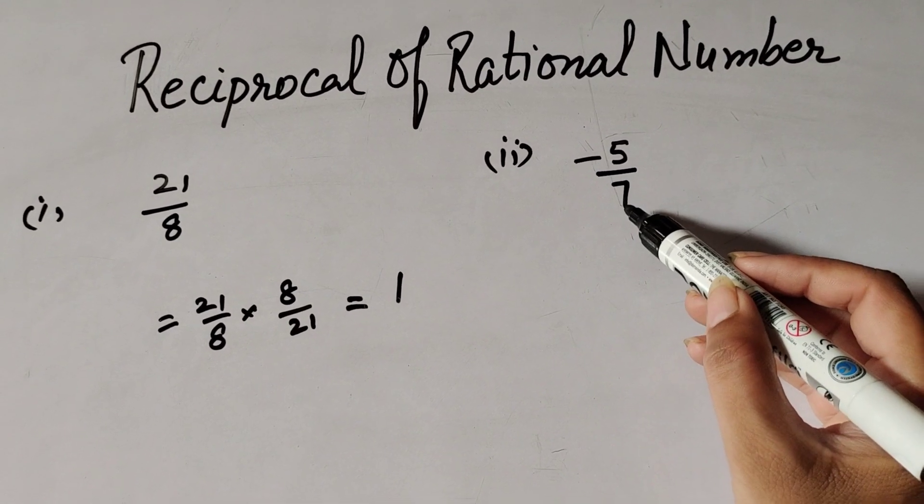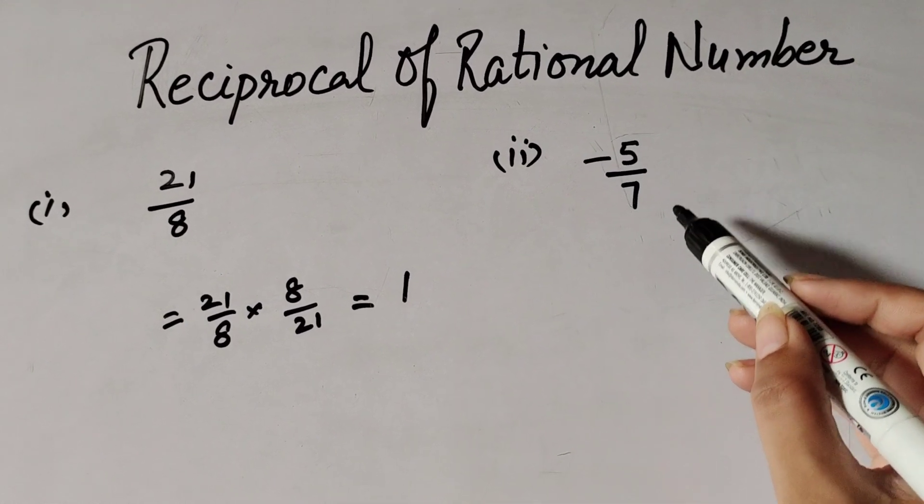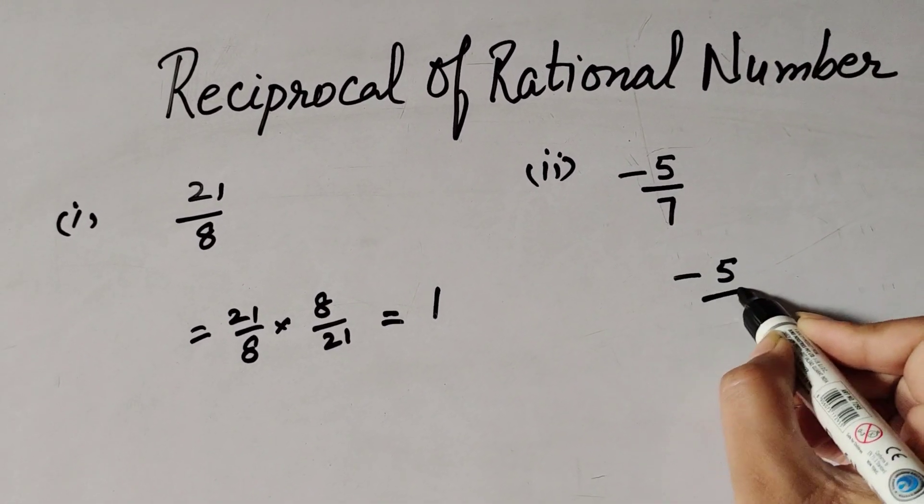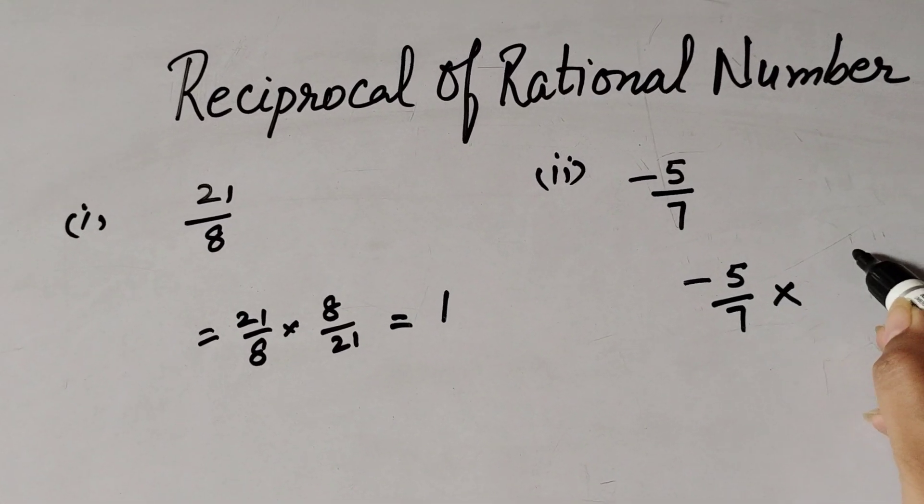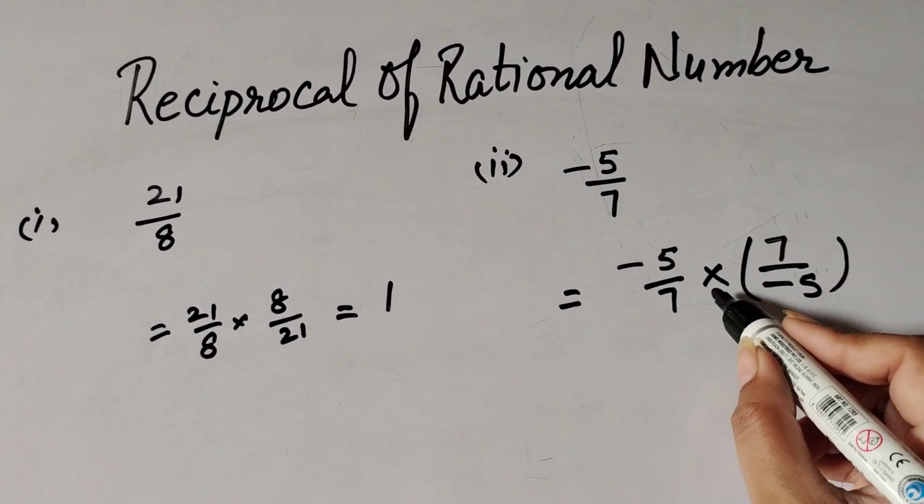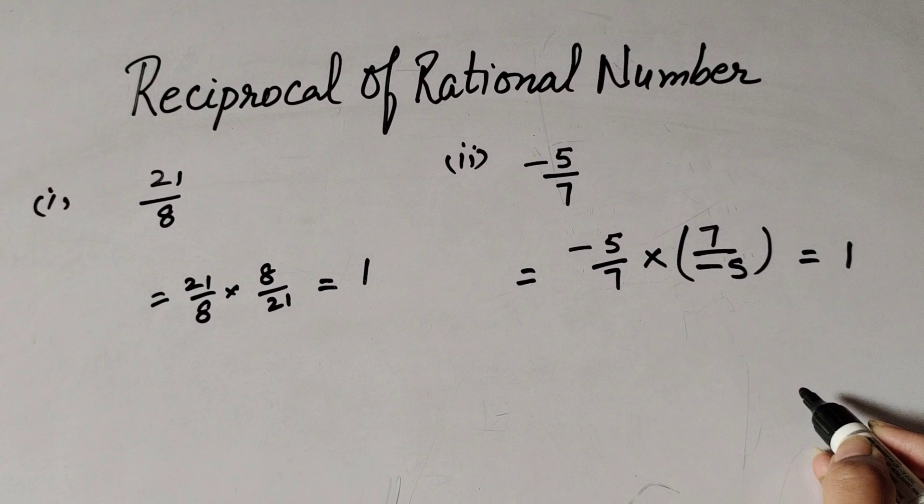In second part, there is a number minus 5 over 7. It is a rational number. So we find the number that is multiplied by minus 5 over 7 so we get its product 1. Obviously, that number is 7 over minus 5. So when we multiply minus 5 over 7 with 7 over minus 5, we get answer 1.